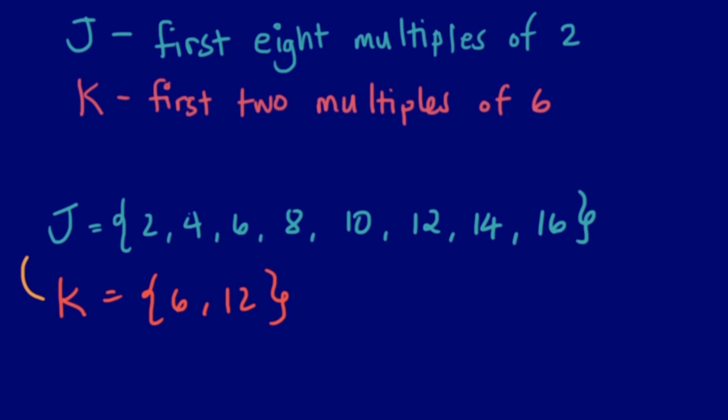Let us see if K can be considered a subset of J. Six is in K and six is also in J. Twelve is in K which is also in J. Now we can say that K is a subset of J. Notice the symbol that we use to represent subset. This is read as K is a subset of J.